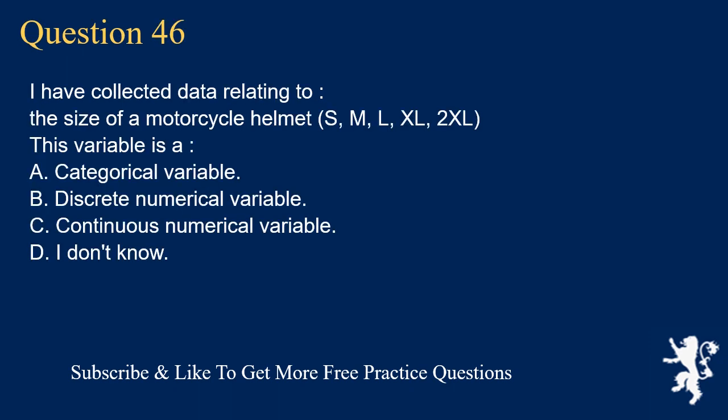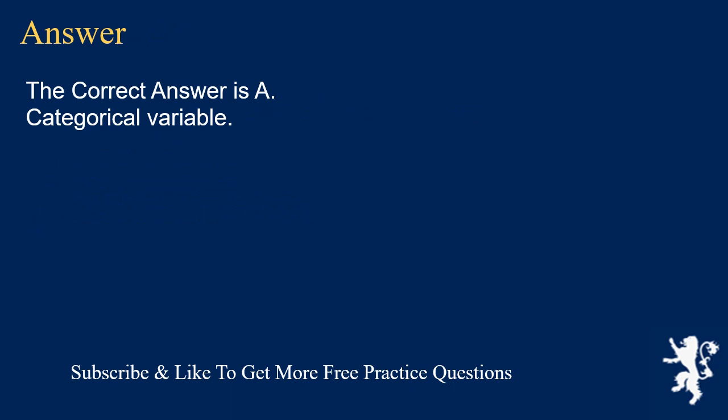Question 46: I have collected data relating to the size of a motorcycle helmet — S, M, L, XL, 2XL. This variable is A. categorical variable, B. discrete numerical variable, C. continuous numerical variable, D. I don't know. The correct answer is A, categorical variable.